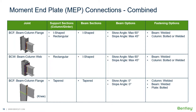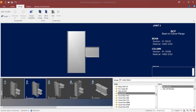In this particular video we are going to be focusing on the workflow for assigning a moment end plate connection to both beam-column flange and beam-column web joints within RAM Connection Standalone. We will now turn our attention to the RAM Connection Standalone application, focusing on designing a moment end plate connection to joints 2, 3, and 4 during this video.